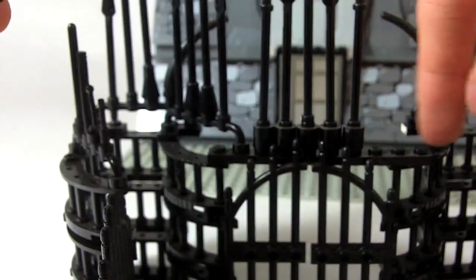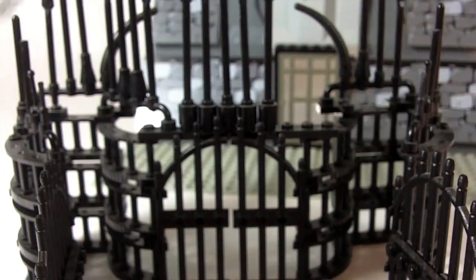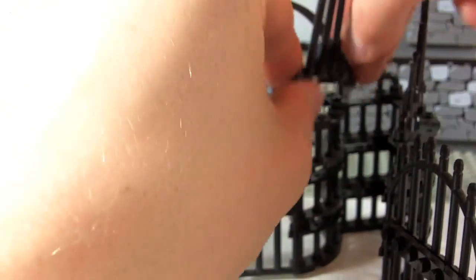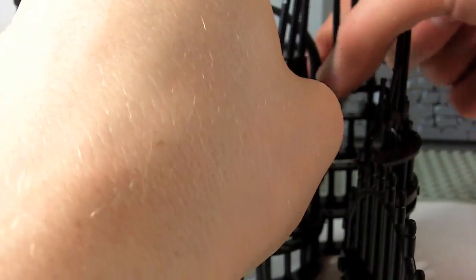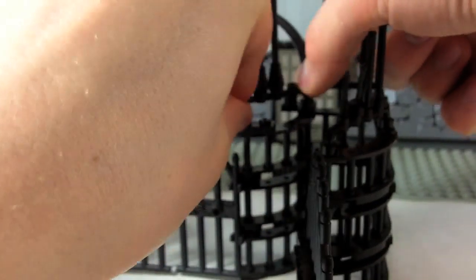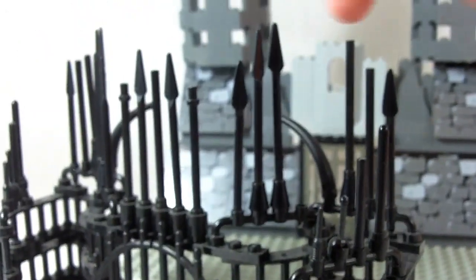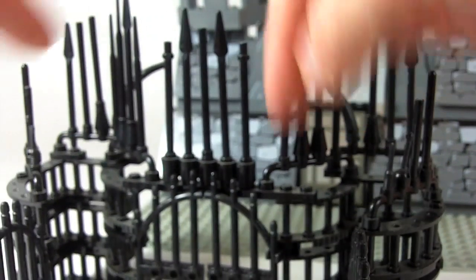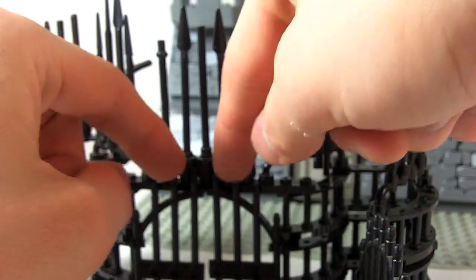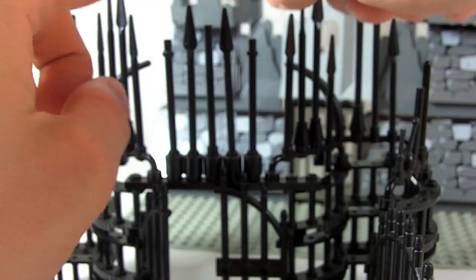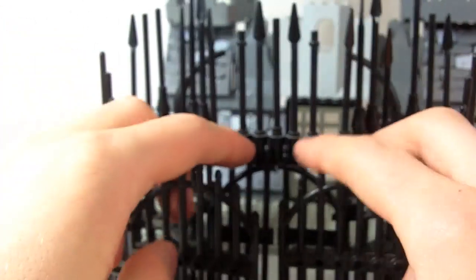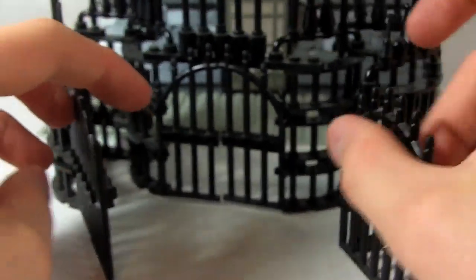And again these pieces here are just more black spears and some with cones. Again, these are cylinders, spears, and the long rod piece. So yeah, so that has these big intimidating gates.